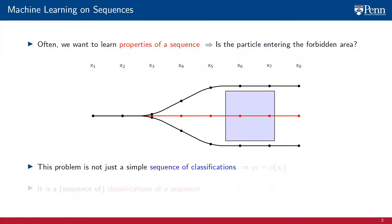This problem is not something that we can map to a sequence of classifications, which is something we would know how to do. Indeed, the destiny of the trajectory is not a function of the current position only. It is a function of previous positions as well. Physical systems have inertia. The direction of movement is important.